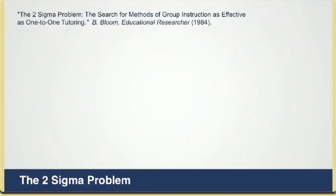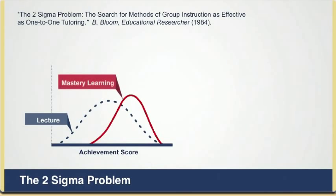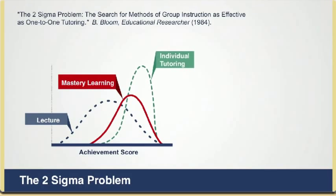Educational researcher Benjamin Bloom in 1984 posed what's called the Two Sigma Problem, which you observe by studying three populations. The first is the population that studied in a lecture-based classroom. The second is a population of students that studied using a standard lecture-based classroom but with a mastery-based approach, so that students couldn't move on to the next topic before demonstrating mastery of the previous one. And finally, there was a population of students that were taught in one-on-one instruction using a tutor.